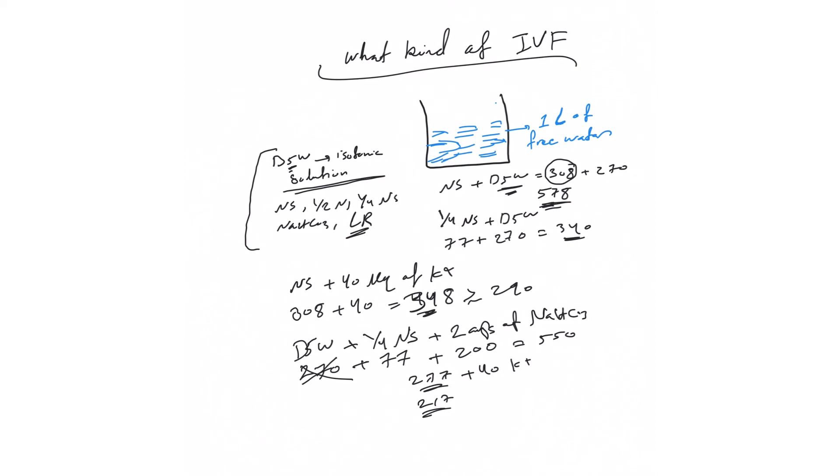Simply, now you just think and add these milliequivalents and you can create your own solution. But remember, D5W can be added to all solutions because when we infuse it in the body, it's isotonic outside but as soon as it gets in the body it becomes like free water. As long as you're hovering around 290, you can keep this isotonic solution.